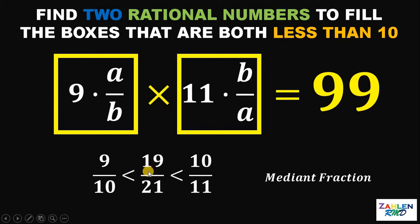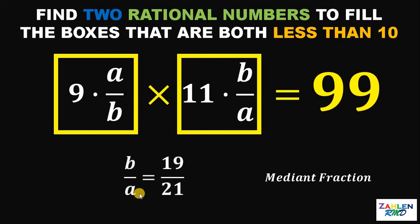Now, surprisingly, 19 over 21 is greater than 9 over 10, but less than 10 over 11. So this 19 over 21 is perfectly fit to our value of B over A.